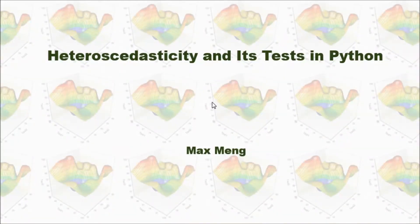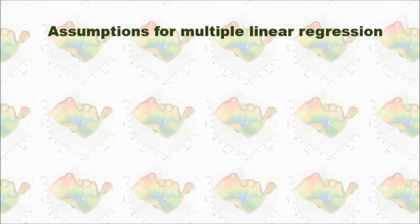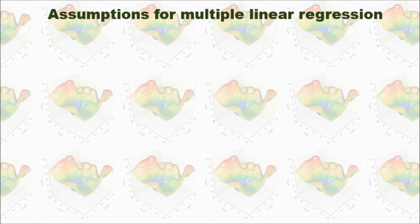This time, I'm going to talk about heteroscedasticity and its tests in Python. First, let's review the assumptions for multiple linear regression.